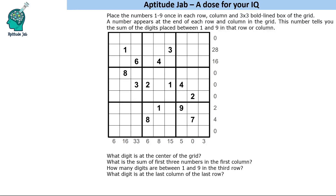Hello everyone, welcome to AptitudeJab. This is a puzzle called Sandwich Sudoku. It has rules like normal Sudoku — you have to place the numbers 1 to 9 in each row, each column, and each 3 by 3 grid.